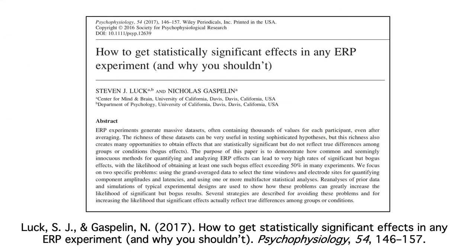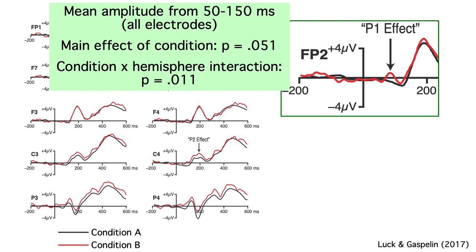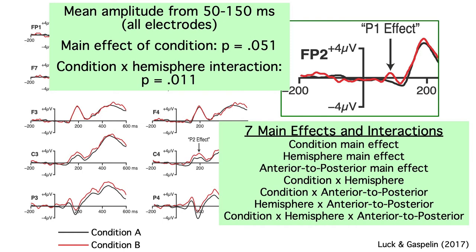I wrote a paper about this issue several years ago with Nick Gasplin, who was a postdoc in my lab at that time. You can find more information there about how researchers should choose their time windows and electrode sites. This paper makes another point as well, related to the finding of a significant condition-by-hemisphere interaction for the P1 wave in this simulated study. I ran a three-way ANOVA for the P1 wave with factors of condition, electrode hemisphere, and anterior-to-posterior electrode position. In a three-way ANOVA, you have three main effects, three two-way interactions, and one three-way interaction — so you get seven p-values from one analysis, giving noise seven opportunities to create a bogus but significant effect.